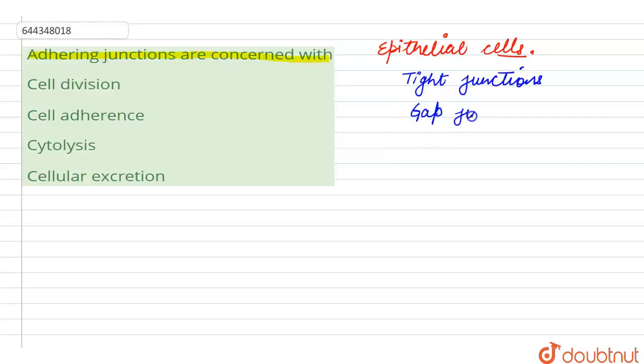The next type is the gap junctions. The gap junctions have a certain gap in between them and these gaps do not provide physical support but they are meant for chemical exchange between the adjacent cells.